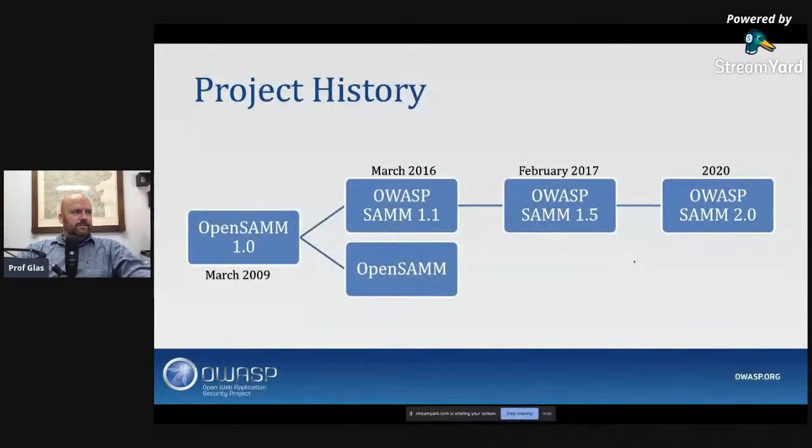A bunch of us got together because we realized the value SAMM had, but also that it needed a bit of a reboot because it was a little stale. In March of 2016, we managed to produce SAMM 1.1. As we worked through things, SAMM 1.2 was renamed SAMM 1.5 to better demonstrate the level of change — more of a change to the scoring model than originally planned. But the core model was still the same: four business functions, three security activities per function. Earlier this year, SAMM 2.0 was released.